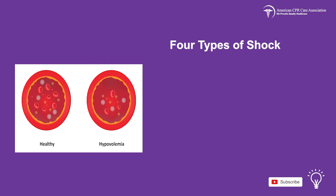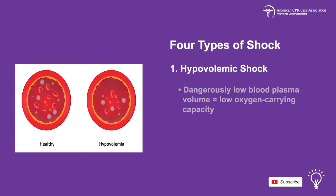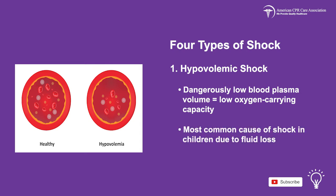The first type is hypovolemic shock, which is a dangerously low blood plasma volume meaning a low oxygen carrying capacity. Hypovolemia is the most common cause of shock in children and it's mainly due to fluid loss.